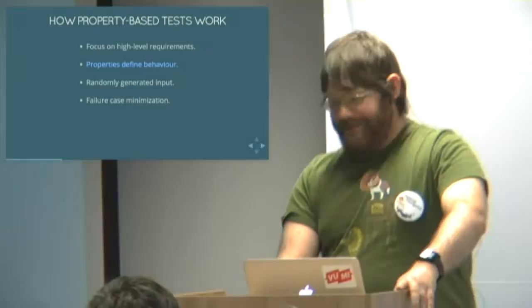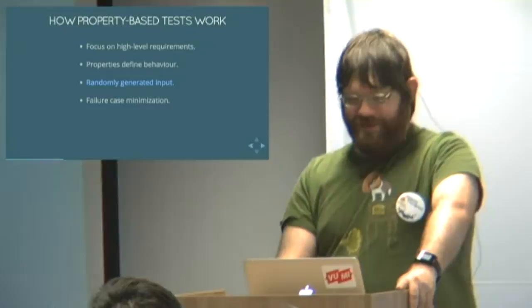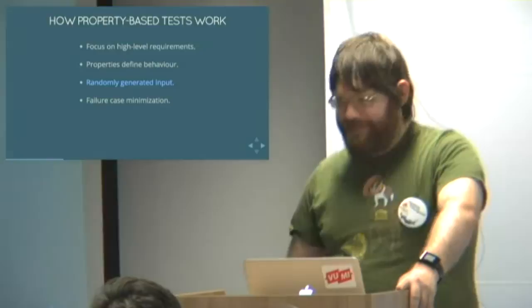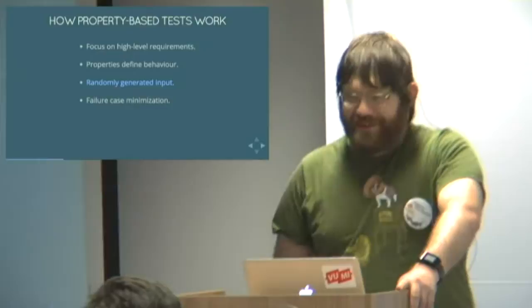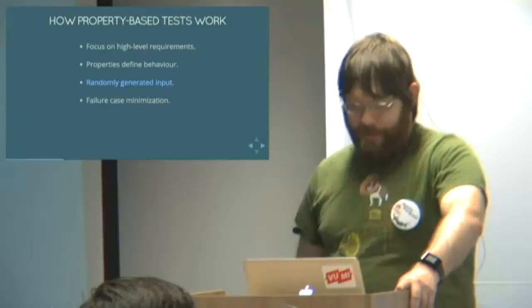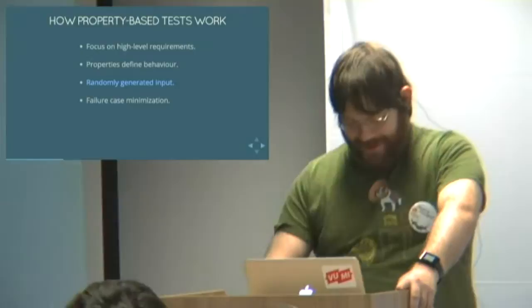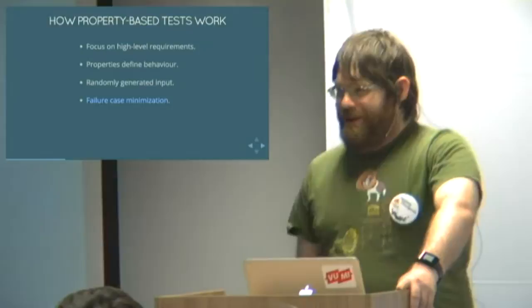So your properties define behavior. The behavior of the priority queue is it gives you back exactly what you put into it, maybe in a different order, and it gives you stuff in priority order. Now you've got these properties which you've written, carefully handcrafted, and you need to test them. So property-based test systems will throw lots of randomly generated input at your properties. So you get wide coverage of all sorts of input that you don't have to sit and think about yourself.